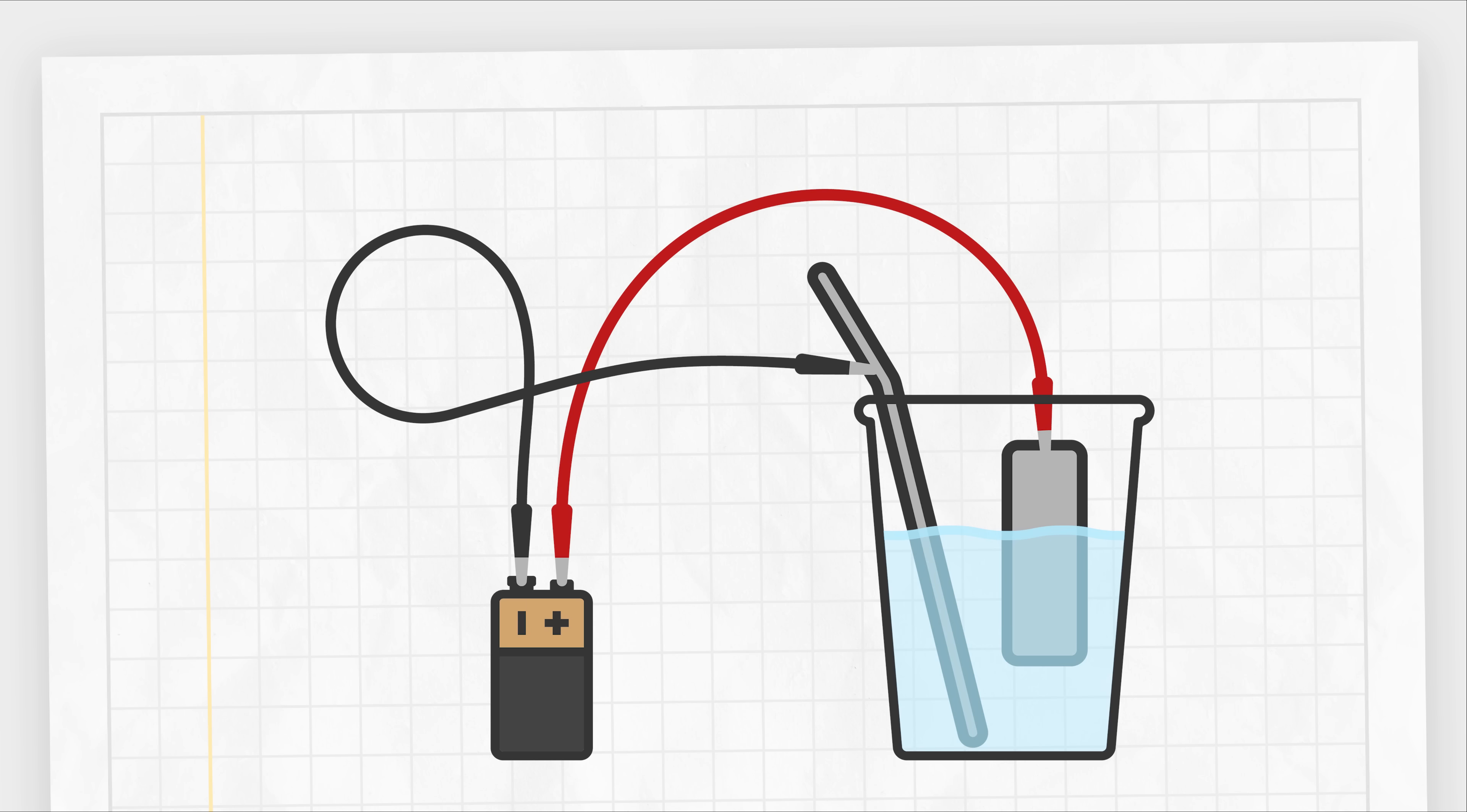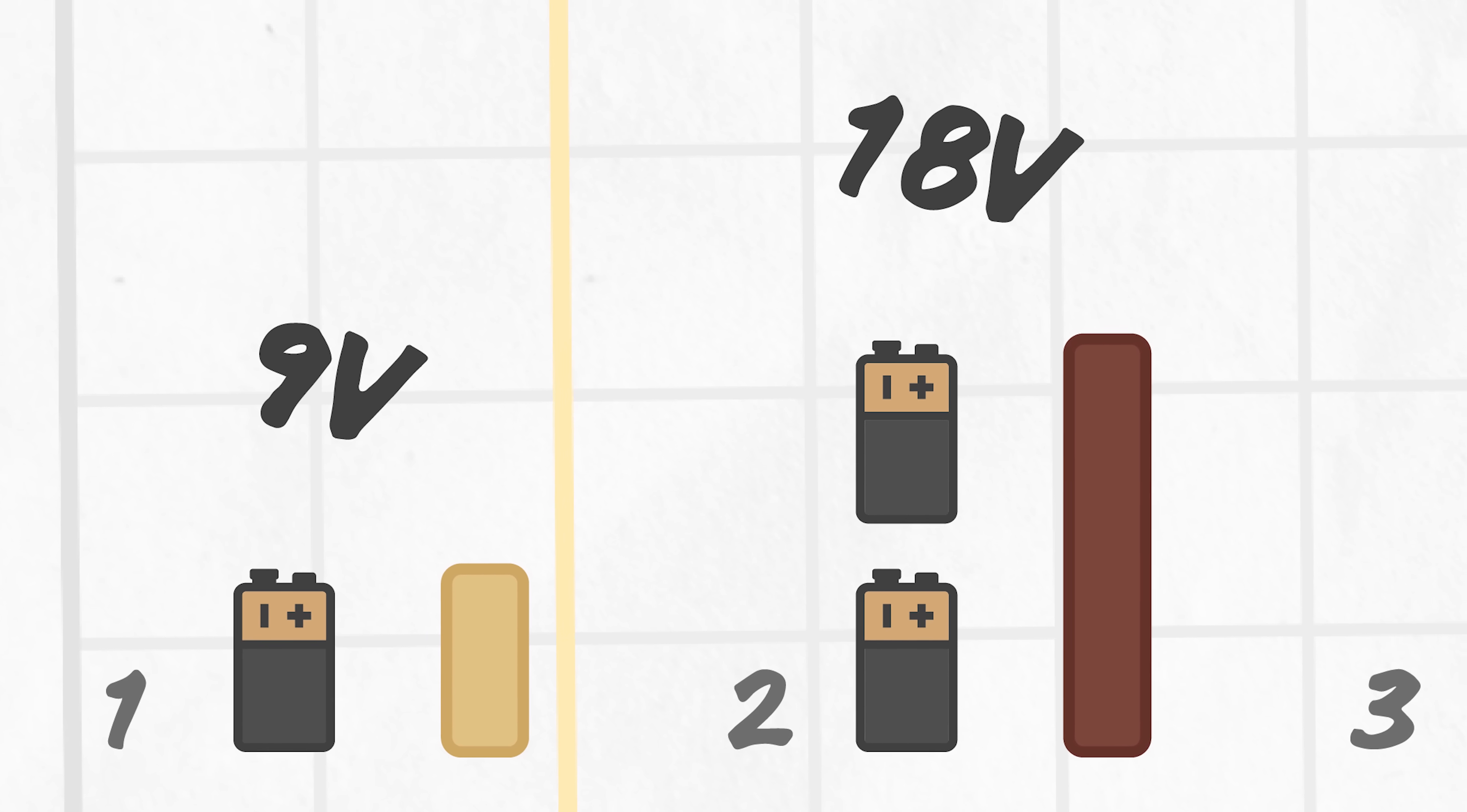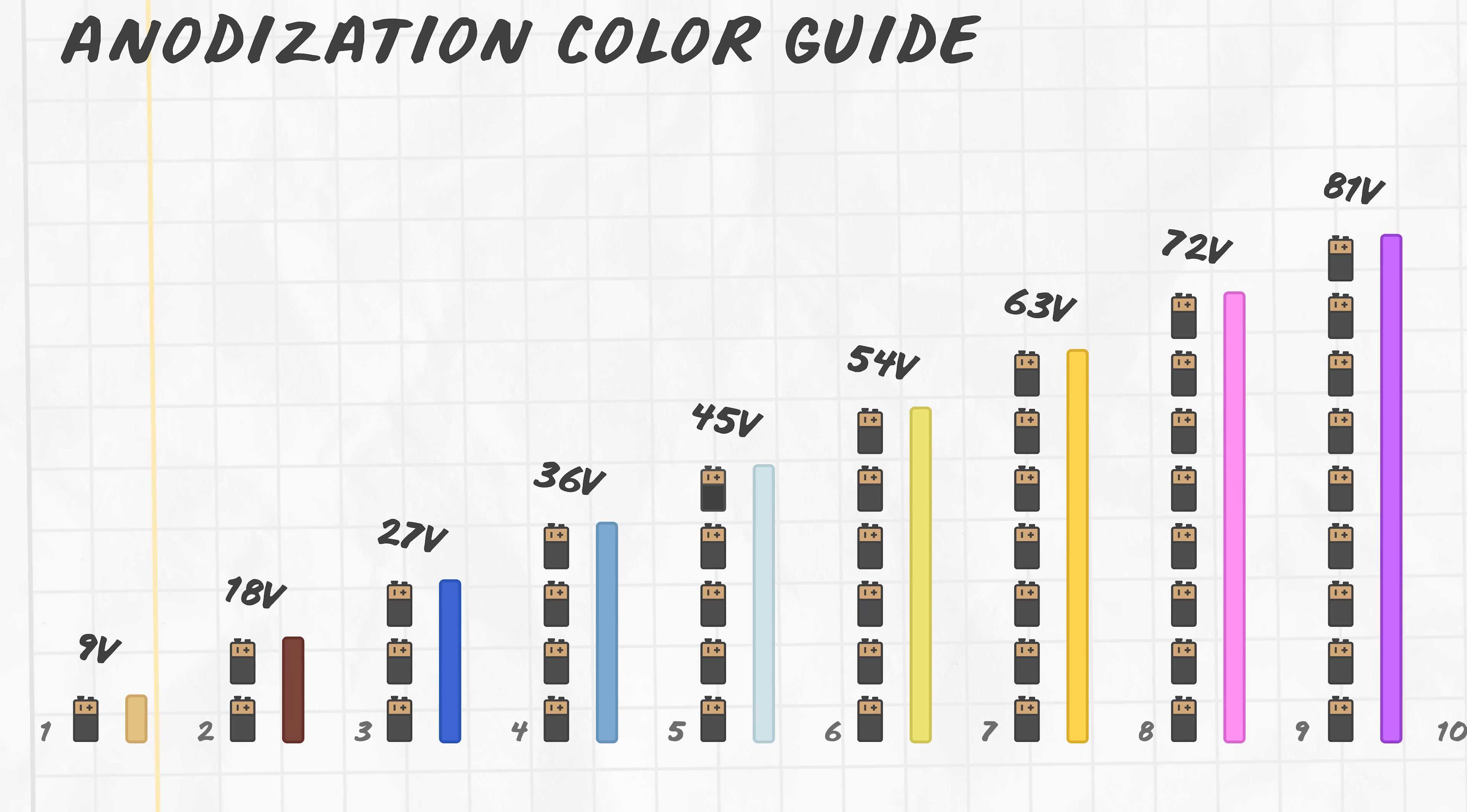And now for a bit of science. Titanium anodization works by manipulating a thin oxide layer through DC current and an electrolyte solution. You get different colors by running higher voltage through your titanium piece while it is in the solution. Nine volts will get you bronze, 18 volts will get you brown, and so on. In a professional setup you can run up to 110 volts. For our at-home setup your colors will top out at around 90 volts.